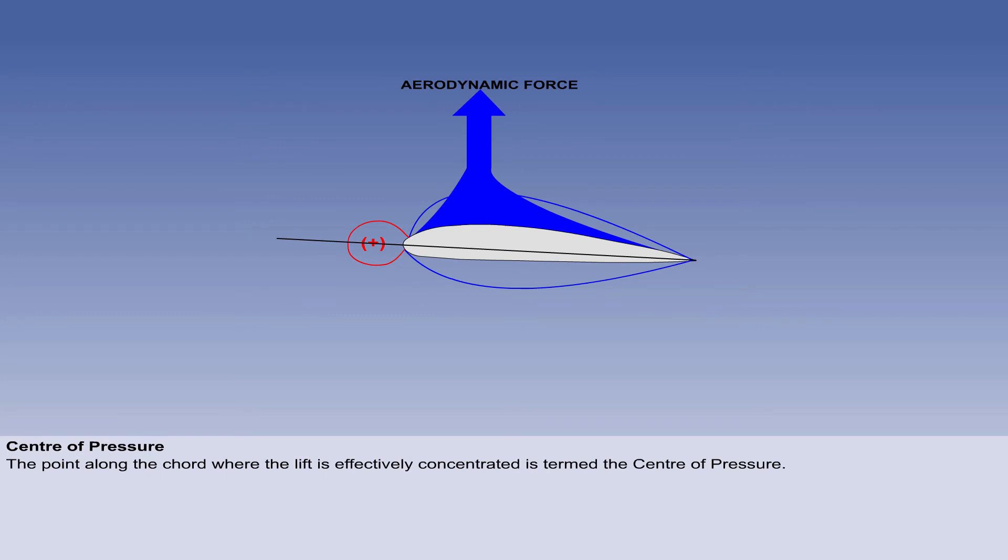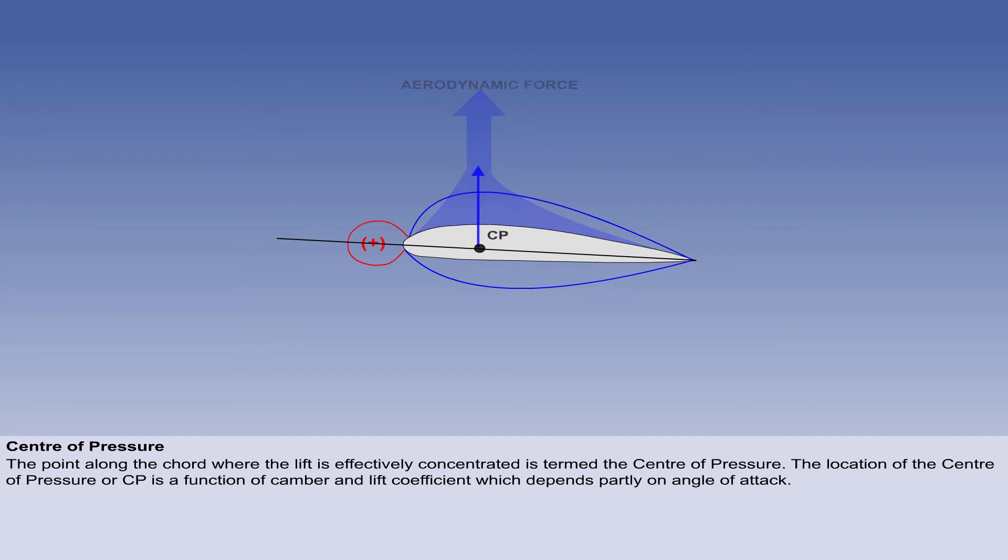The whole surface of the aerofoil contributes to lift, but the point along the chord where the lift is effectively concentrated is termed the centre of pressure. The location of the centre of pressure, or CP, is a function of camber and lift coefficient, which depends partly on angle of attack.